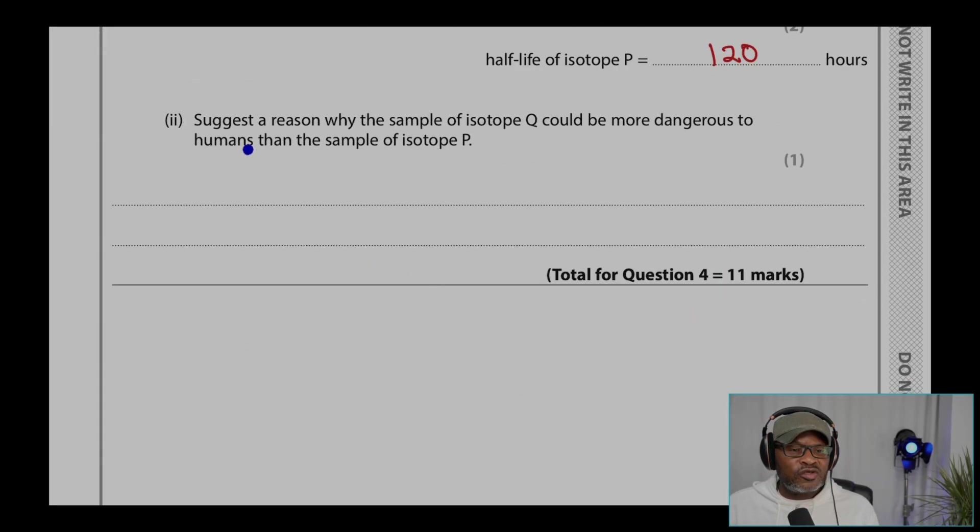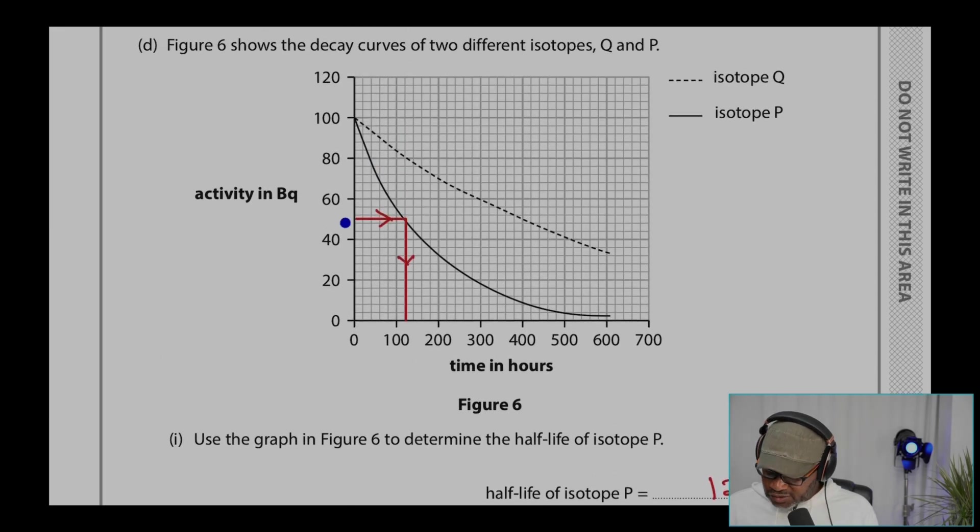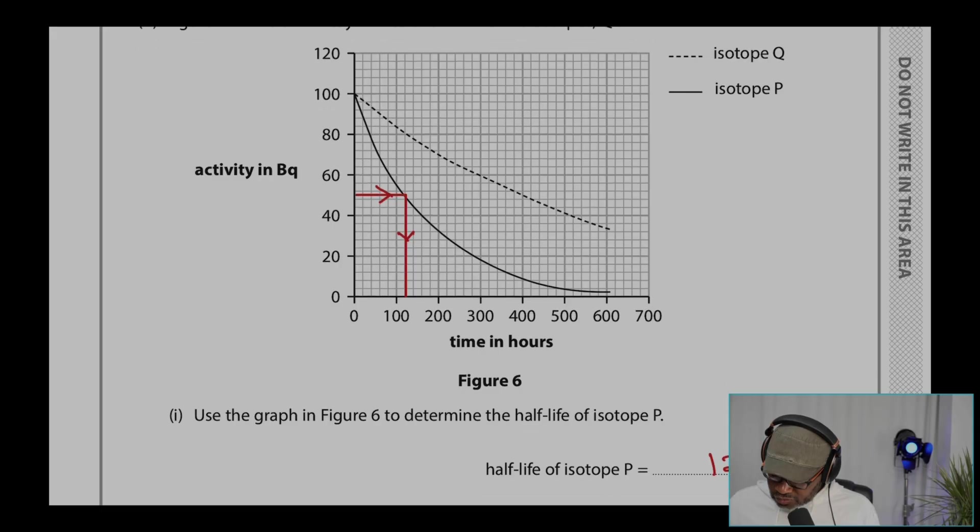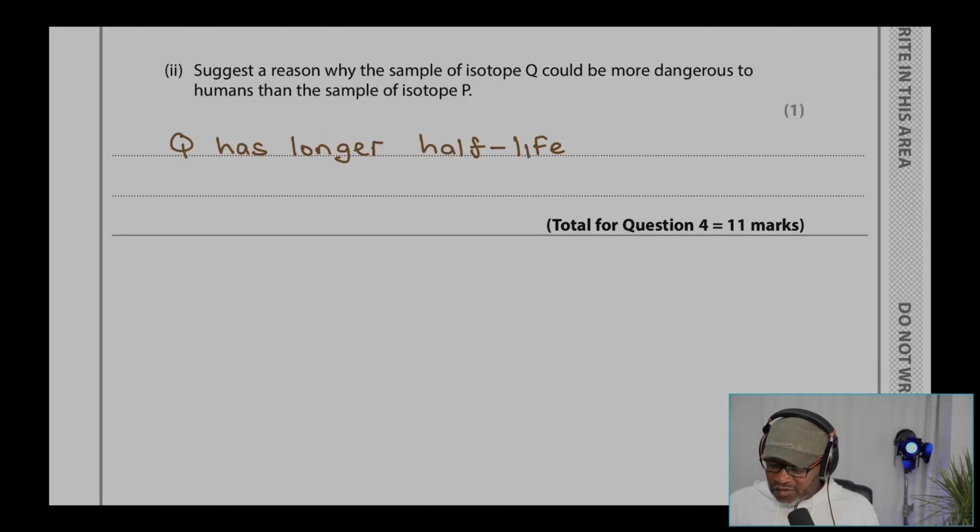Part two, suggest a reason why the sample of isotope Q could be more dangerous to humans than the sample of P. Well, because Q has longer half-life. As you can see, Q is that one, and the half-life is much longer than P. They both start at 150, and therefore the time would be much longer too. Q has a longer half-life, and Q takes longer to decay.